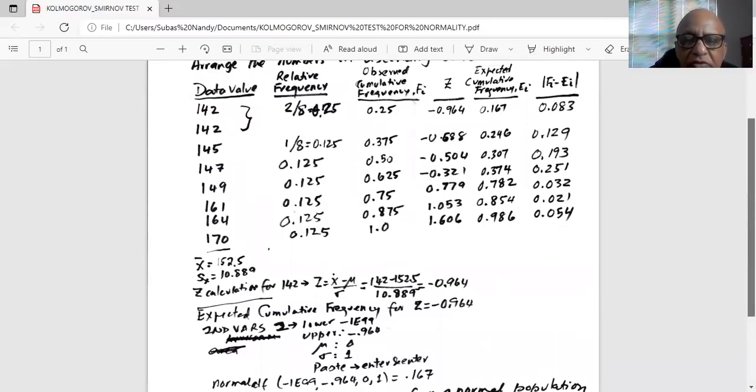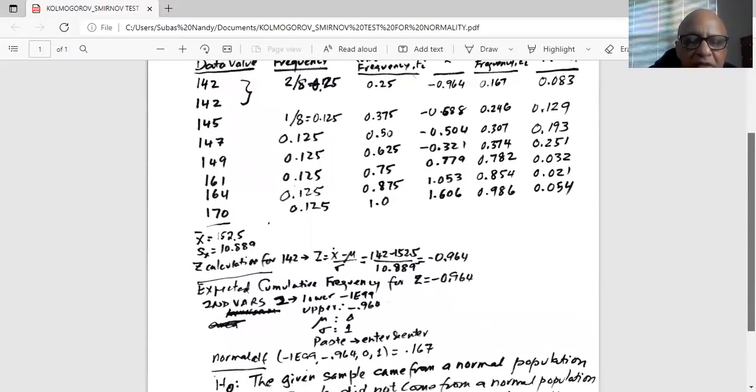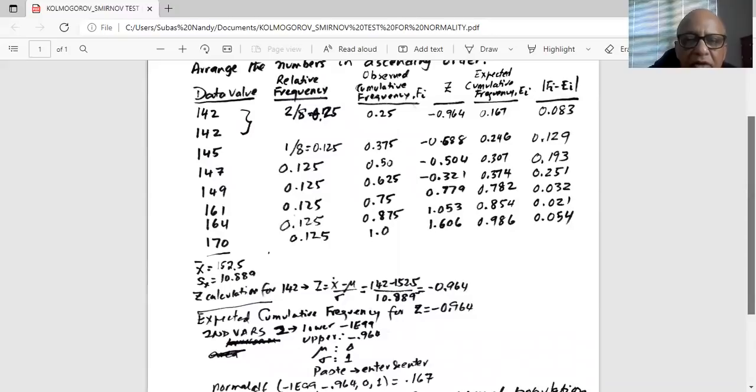So we go to second VARS 2 which is normal CDF. Lower, since we are on the left of minus 0.964, the lower is a very large negative number, which is minus 1 E 99. Upper, I want to stop at minus 0.964. Mu is zero, sigma is one. I paste enter and enter. I get the expected cumulative frequency 0.167. So what does it mean? That means 16.7% of the data is below a z score of minus 0.964.